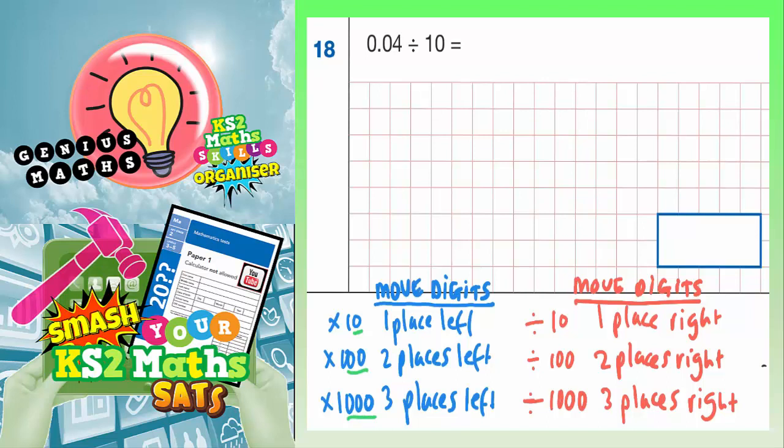But when you're making the number smaller, you're dividing by 10, you move the digits to the right. And this is what we've got to do here. We've got to divide by 10. So the one that we're actually focusing on should be this divide by 10 here. So we're going to move the digits one place to the right. So let's have a look at what that leaves us with.